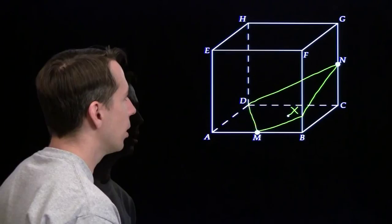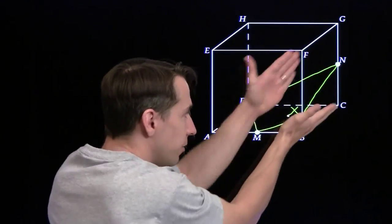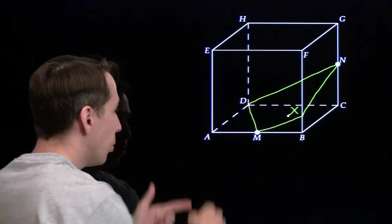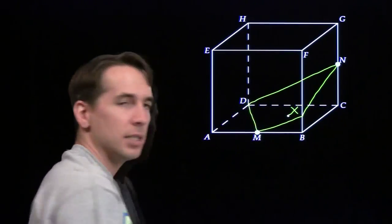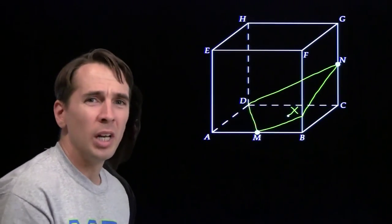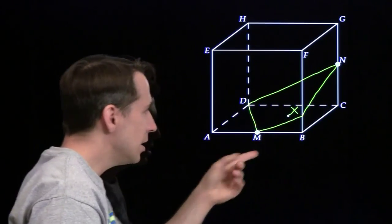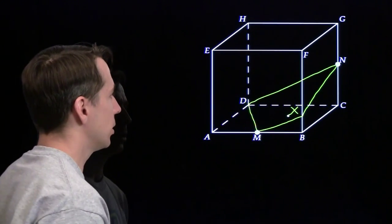Well, clearly NX and CB intersect. They're both in this side face. They're not parallel. They're going to hit a point somewhere. Same thing for DM and CB. They're both in the bottom face. They're not parallel. They're going to hit at a point. The question is, will NX and DM hit CB, the line, at the same point?